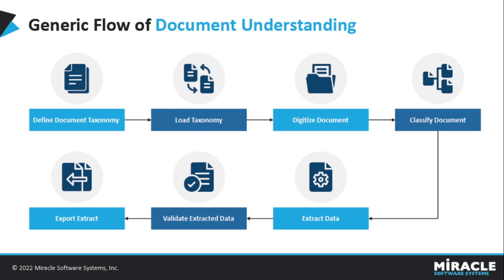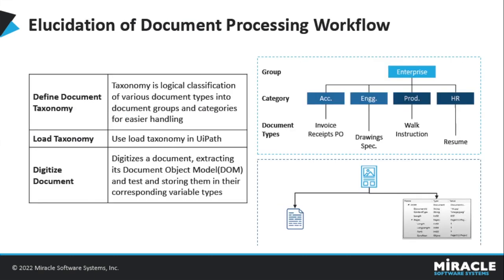Let us see each step briefly. The first activity is Define Document Taxonomy. Taxonomy is a logical classification of various documents into groups and categories. To classify it further, taxonomy defines how to organize your documents into different groups and categories.